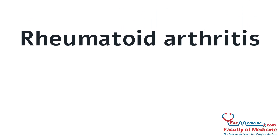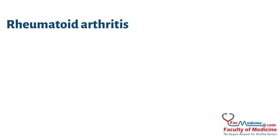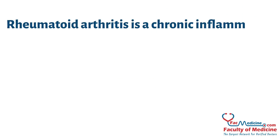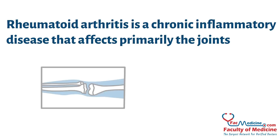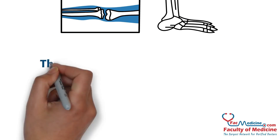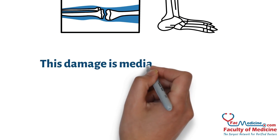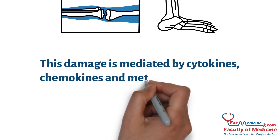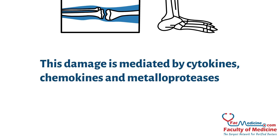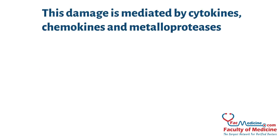Rheumatoid arthritis is a chronic inflammatory disease that affects primarily the joints. This damage is mediated by cytokines, chemokines, and metalloproteases.